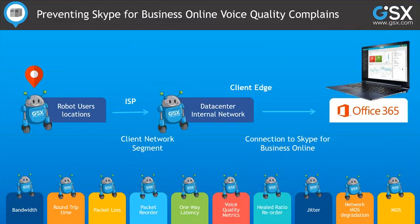Let's go now to our second topic: preventing Skype for Business Online voice quality complaints. We've seen that Microsoft provides SLAs on voice availability and voice quality, and that they rely on constant measurement of several metrics. If you have issues with voice quality, you need to back your claim with all these statistics. Garth will show in a minute how you can easily do that with the GSX robot user. Microsoft clearly explains that you should constantly measure these network metrics and Skype voice quality statistics from your client side and from your data center edge, to understand the impact of your own network on Skype voice quality.